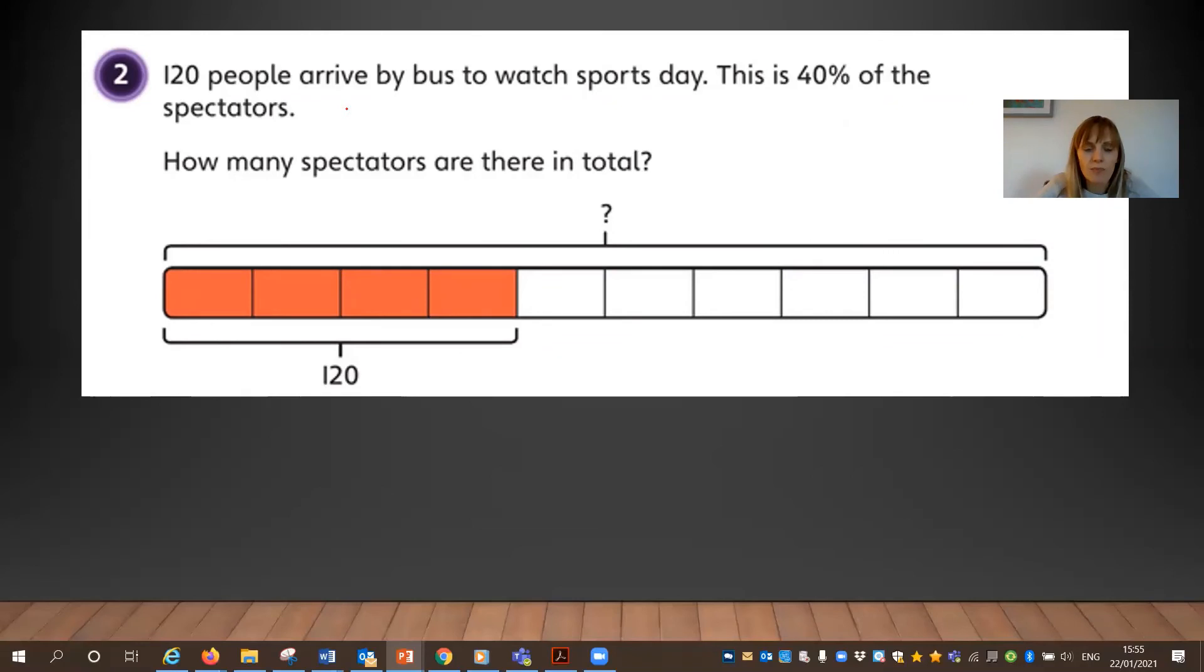Last one then. This is more of a word problem now. 120 people arrive by bus to watch sports day. This is 40% of the spectators. How many spectators are there in total? Now, this is slightly more complicated because this time 40%, like our other ones, was very obvious. It was one tenth, one fifth, one quarter, one half. This time it's still four tenths. So what you have to think in this case, if there isn't an equivalent fraction that's easy to divide into, is I always say to children, put it into its over 100th form and then simplify it. So this simplifies down to four tenths. That's the simplest form. And this time it's saying, well, four tenths is the same as 120.